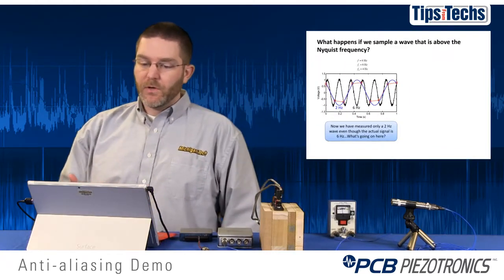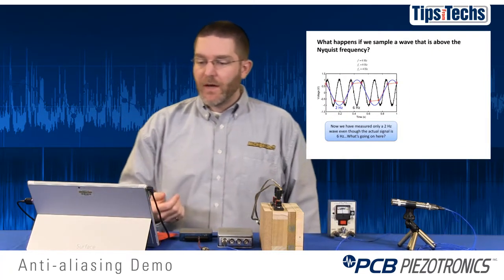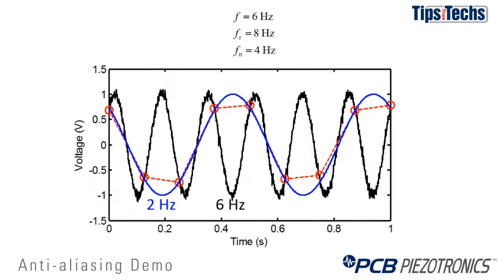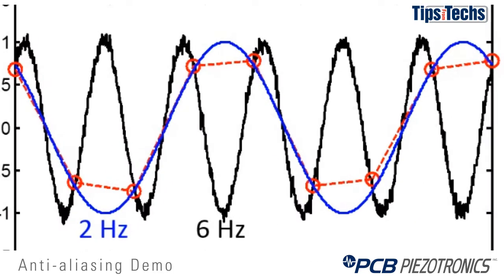When we sample an acoustic wave, we're taking snapshots of that wave at discrete points in time. In this example, we have a 6 Hz acoustic wave in black that we're trying to measure, and we have our sample rate set at 8 Hz. That means we're going to take eight samples of that sine wave in one second — you can see those samples as red dots on the screen. Our Nyquist frequency is 4 Hz, meaning anything above 4 Hz will be aliased.